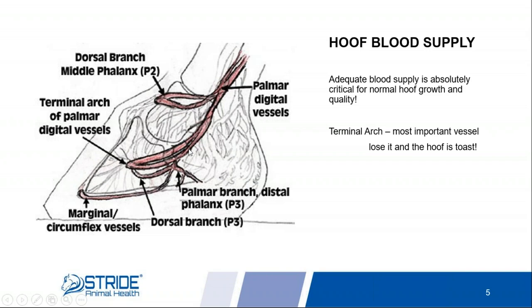Back here is where the navicular bone is. The deep digital flexor tendon comes down the back of the leg and ties into the back of the coffin bone. This major blood vessel actually sits between that deep digital flexor tendon and the coffin bone and second phalanx. So if we put a lot of pressure on the deep digital flexor tendon, it essentially squeezes these blood vessels against the navicular bone and other structures, restricting blood flow. Taking the tension off that tendon is a key component to maintaining adequate blood supply.